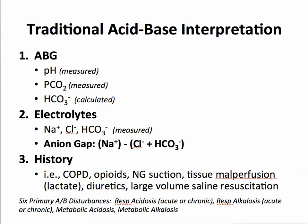We can then calculate an anion gap using sodium as the major cation, and chloride and bicarbonate as the anions, subtracting those out to see if there's an anion gap. Then we look at the history: does the patient have COPD (respiratory acidosis with metabolic compensation), metabolic alkalosis as a compensatory mechanism, opioids causing acute respiratory acidosis, NG suction removing chloride and hydrogen ion causing metabolic alkalosis, tissue malperfusion causing lactate and anion gap acidosis, or diuretics causing contraction alkalosis, or large-volume saline resuscitation causing hyperchloremic metabolic acidosis.